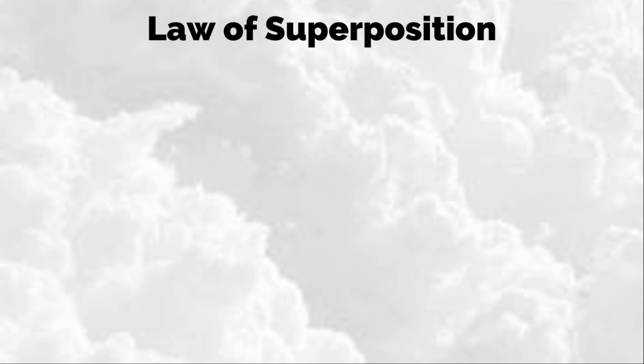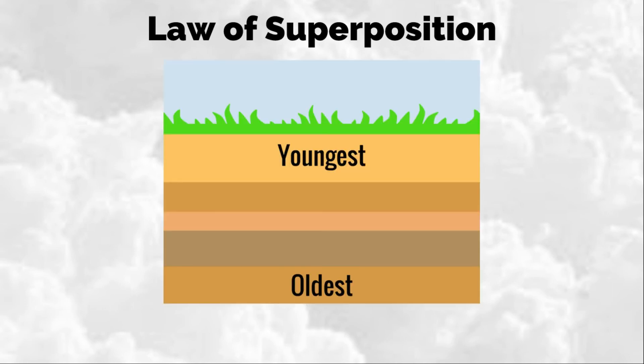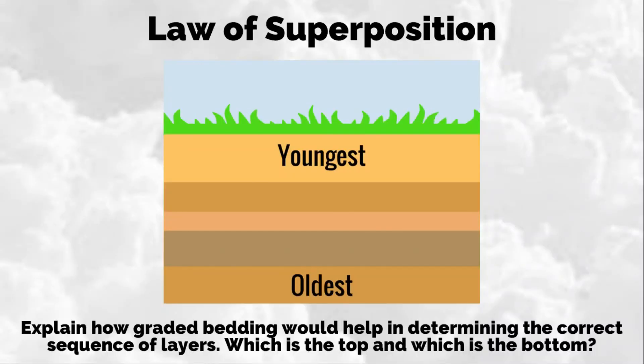Another important topic in studying stratification is the law of superposition. Superposition is a fundamental principle in stratigraphy: in an undisturbed sequence — meaning no faults or folds — the bottom layer was formed before the top layer. However, rocks may be subjected to deformation and sedimentary layers may be overturned. We need to ensure rock layers are in the correct sequence and position to correctly interpret the geological history of an area. For homework: explain how graded bedding helps determine the correct sequence of layers — identifying which is the top and which is the bottom.